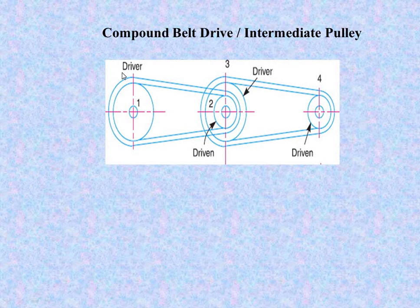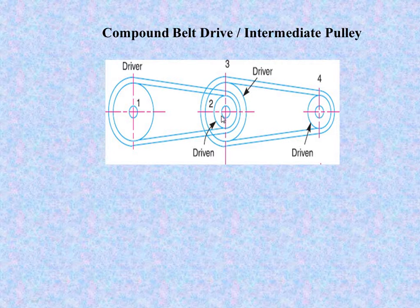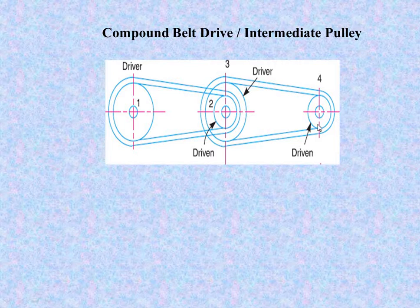Next type is the compound belt drive or intermediate pulley. Here, pulley number one is the driver pulley. This belt drives pulley number two, which is driven. Then there is compounding — pulleys two and three are mounted on the same axis, with the same center. Pulley three drives pulley number four. The belt arrangement goes from one to two, and then from three to four — this is the compound belt drive.